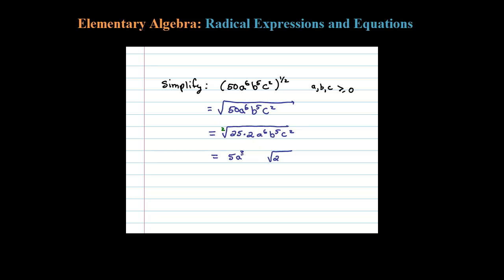Let's look at the b. The index here goes into the exponent 5 two times. That tells me I can simplify that as b squared, but 2 goes into 5 twice with 1 left over, so there's going to be a b left over inside the square root.